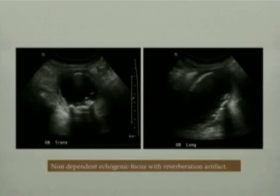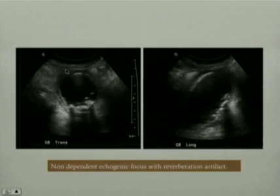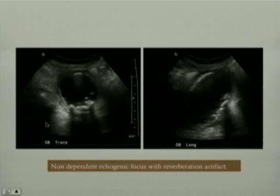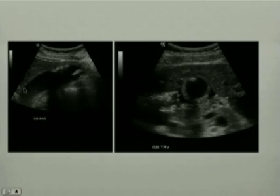Yet another, better example of ultrasound images of emphysematous cholecystitis demonstrates a very inflamed gallbladder. The transverse and sagittal images demonstrate a distended gallbladder, some dependent echogenic foci with posterior acoustic shadowing representing gallstones, and some non-dependent echogenic foci more anteriorly with posterior reverberation artifact suggesting the presence of air. Another example shows a distended inflamed gallbladder with dependent echogenic foci representing gallstones and non-dependent echogenic foci demonstrating air.